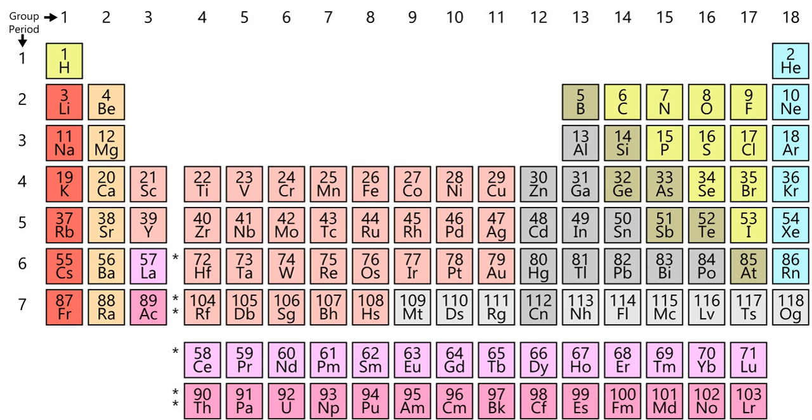The history of the discovery and use of the elements began with primitive human societies that found native elements like carbon, sulfur, copper, and gold. Later civilizations extracted elemental copper, tin, lead, and iron from their ores by smelting, using charcoal.